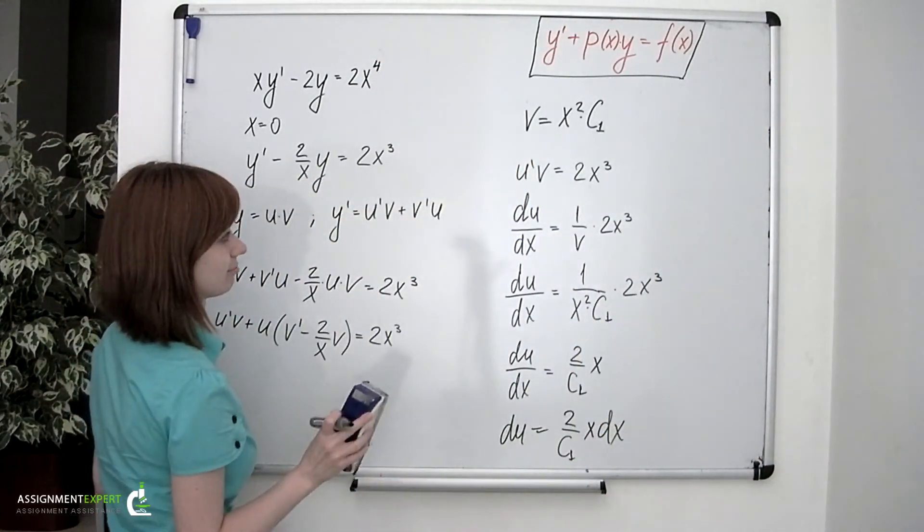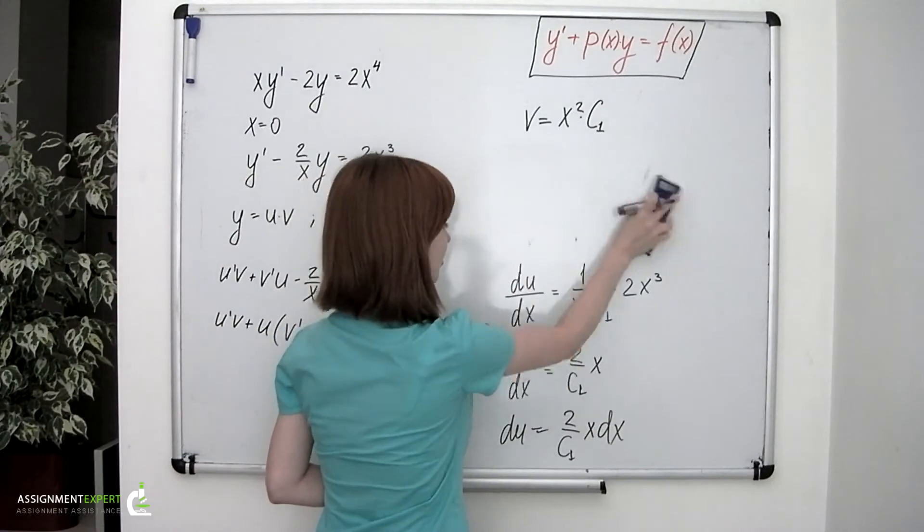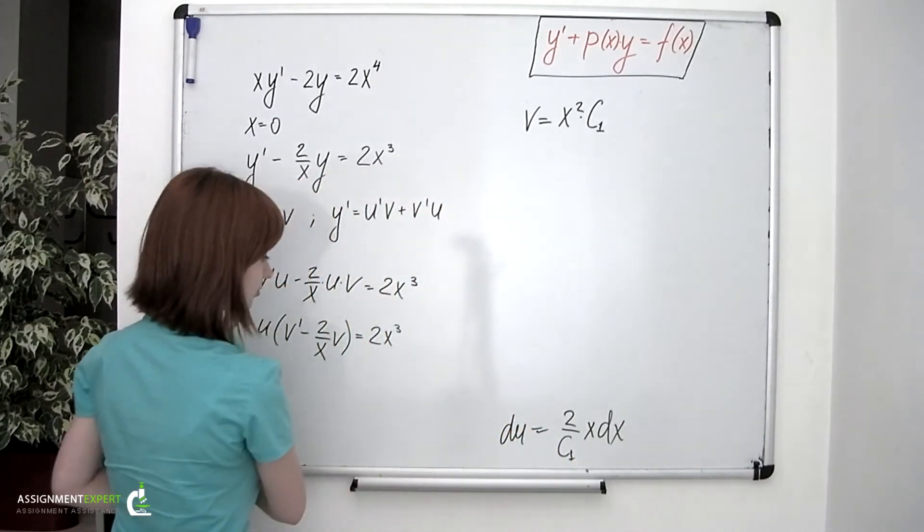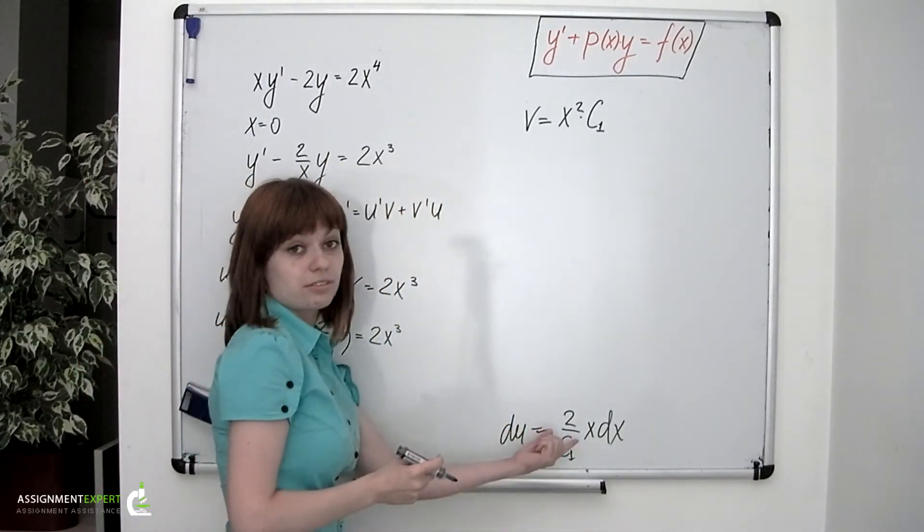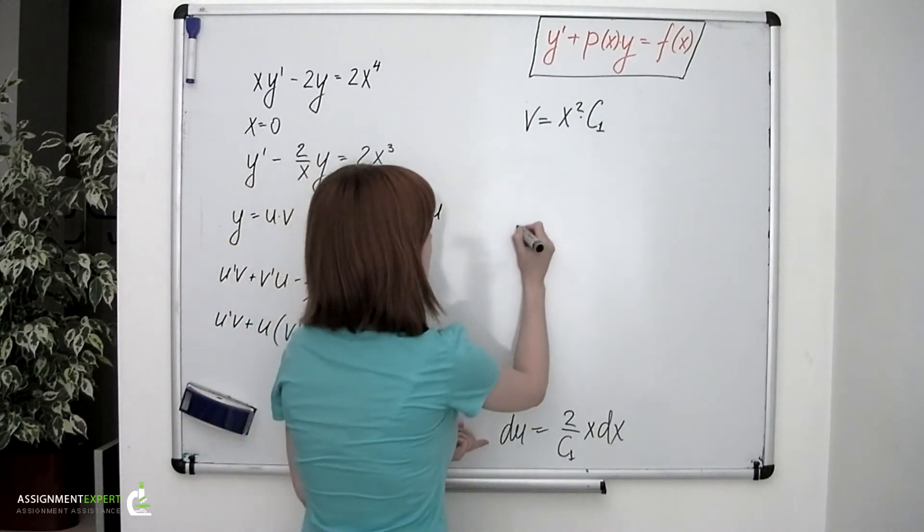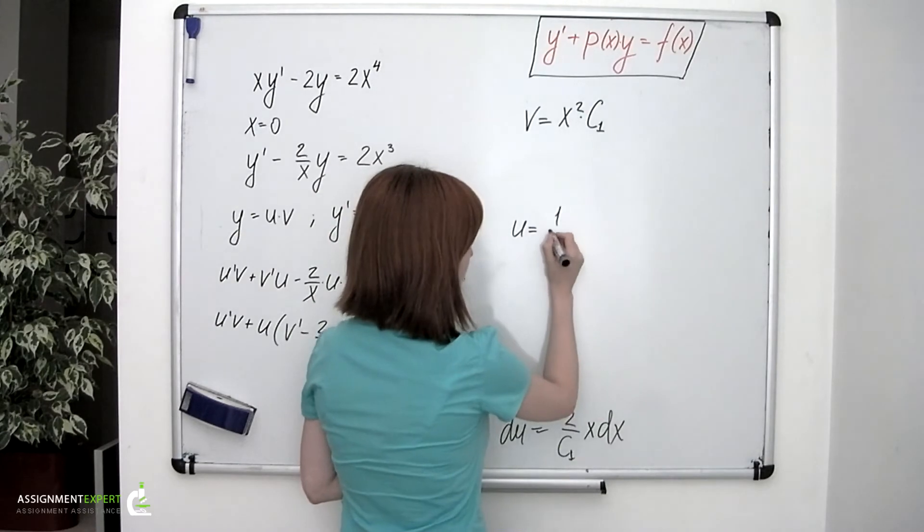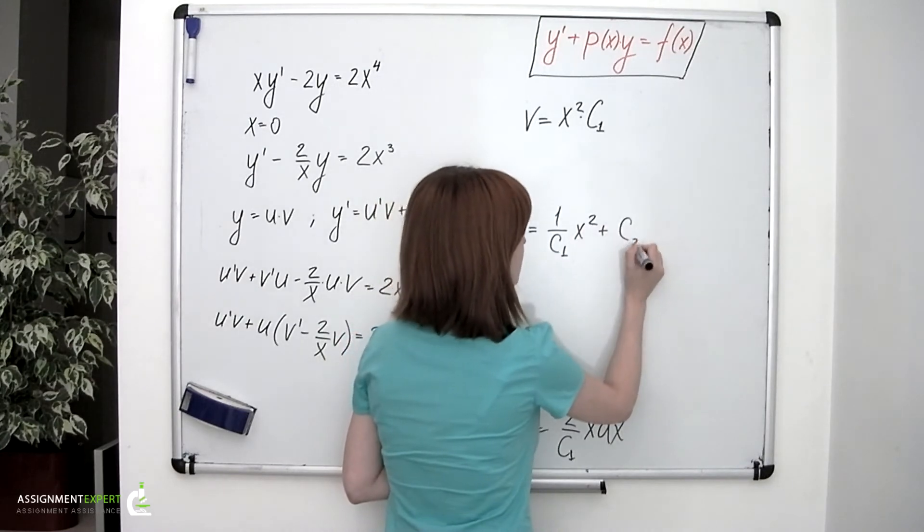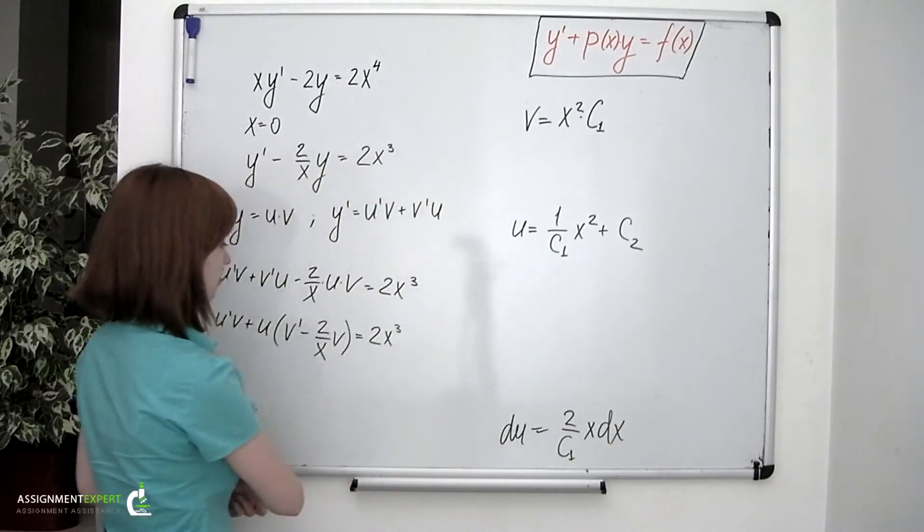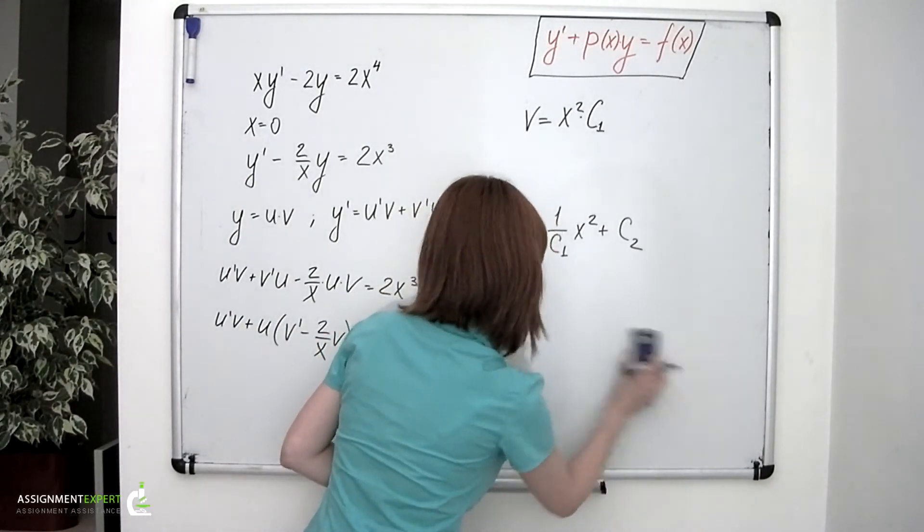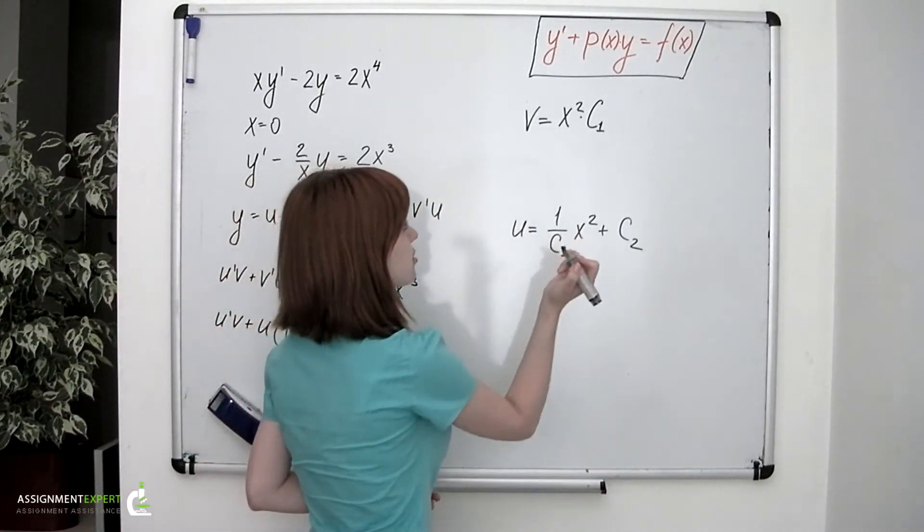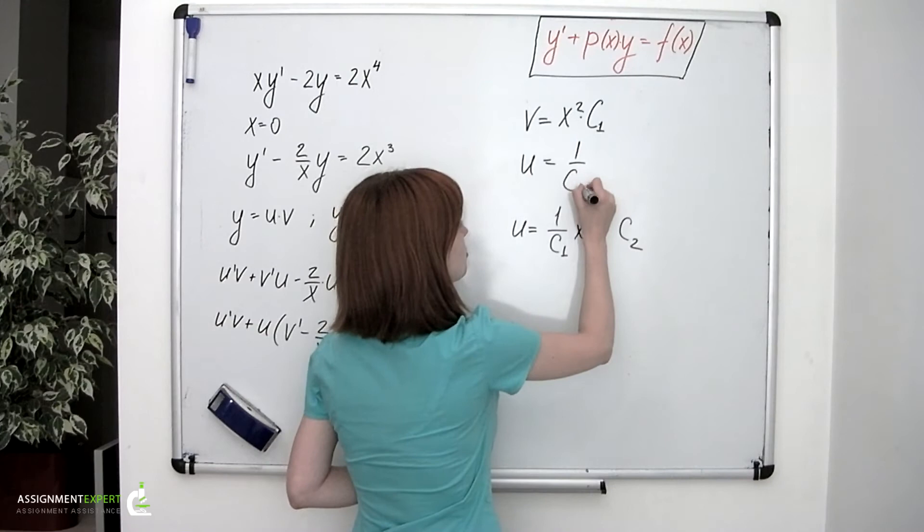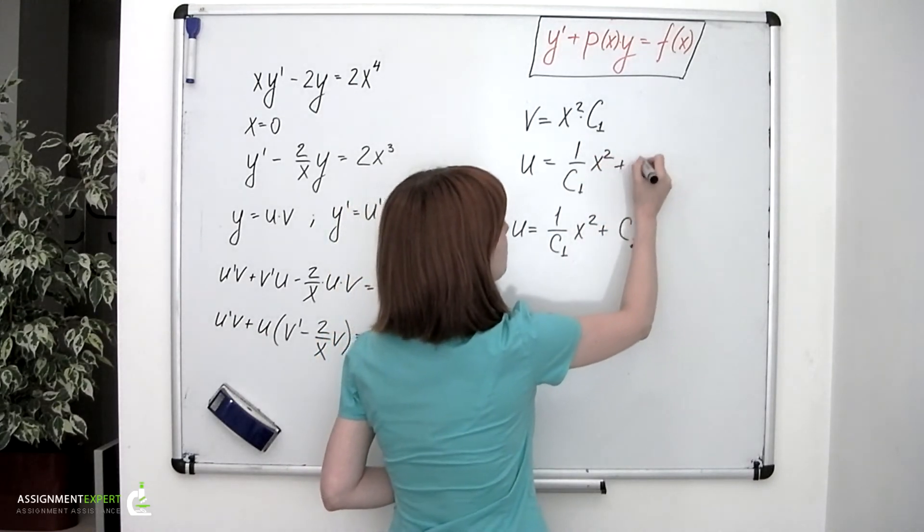So I'll integrate both left and the right side of this equation and obtain u equals 1 over c sub 1 times x squared plus another constant. Let me just write it one more time. So our u function equals 1 over c sub 1 times x squared plus c sub 2.